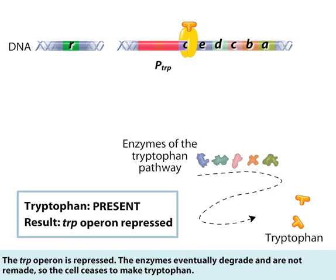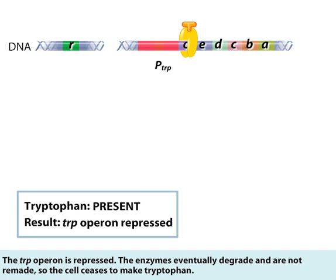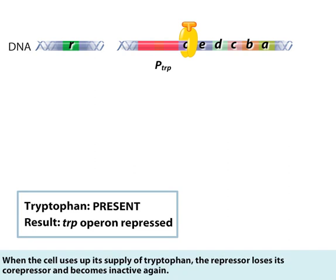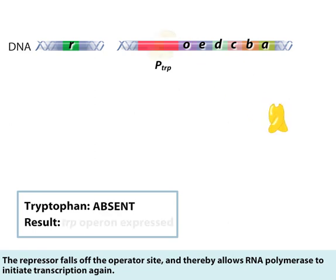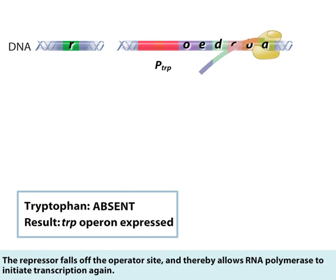The enzymes eventually degrade and are not remade, so the cell ceases to make tryptophan. When the cell uses up its supply of tryptophan, the repressor loses its co-repressor and becomes inactive again. The repressor falls off the operator site and thereby allows RNA polymerase to initiate transcription again.